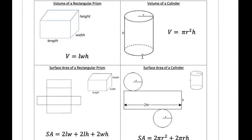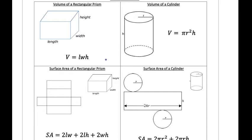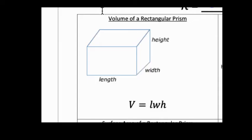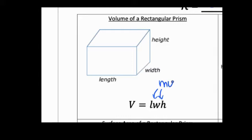The formulas you're going to be using are all listed here and will be given to you during your SOL test, so you can access your formula sheet. The volume of a rectangular prism — which looks like a cube but can also have a non-square base — has a length, width, and height. To find the volume, we use V = LWH, which means volume equals length times width times height — just multiply all of those dimensions together.